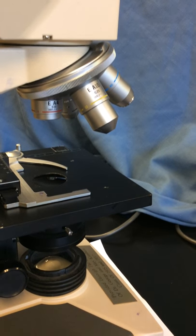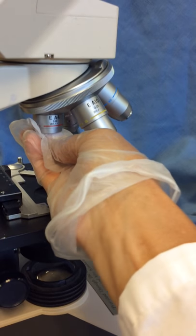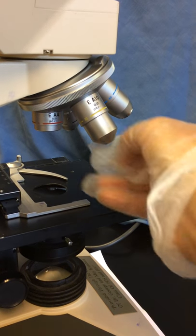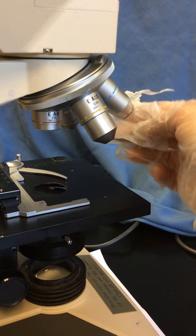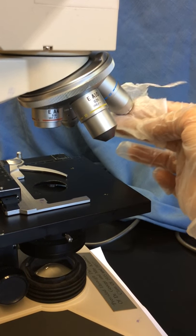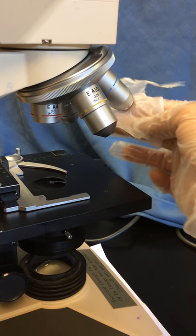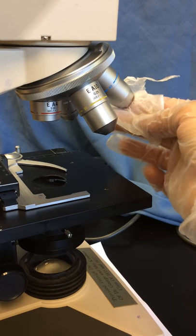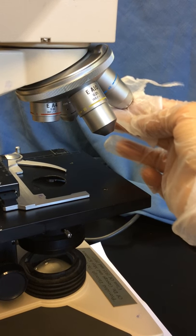I would start by cleaning the scanning lens and then move over to the low power lens. Very important to check the high dry lens because the high dry lens is so long, if there is immersion oil on a slide, by accident we might drag the high dry lens through the immersion oil and we'll get immersion oil on the high dry lens.